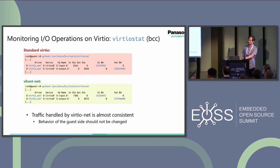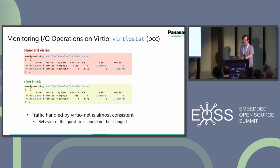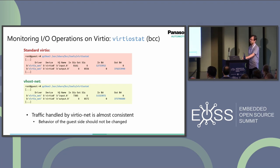Let's change the approach and focus on monitoring IO operations on virtio using virtio-stat. Note that we have to run this command from the guest side instead of the host side. The buffer length handled by virtio-stat is shown here — the left side is in-buffer length and the right side is out-buffer length. As a result, we can observe that the traffic handled by virtio-stat is almost consistent between standard virtio-net and VHOST-net, which implies the behavior of the guest side should not be changed, at least on the interface level.